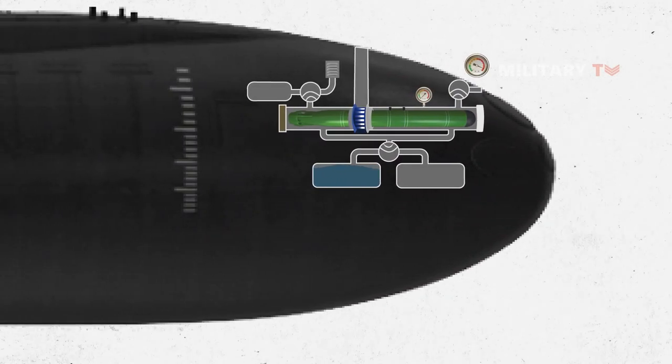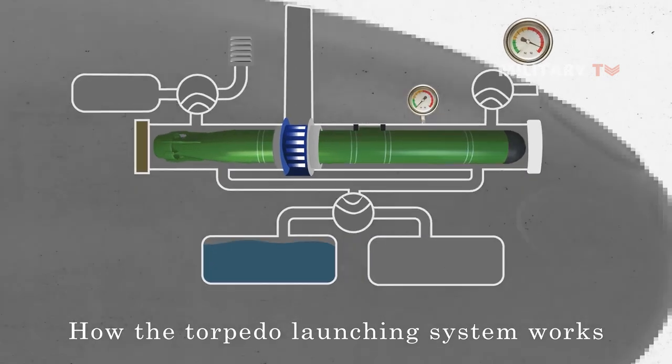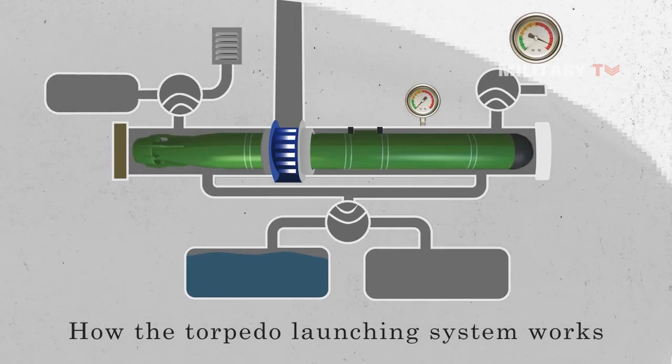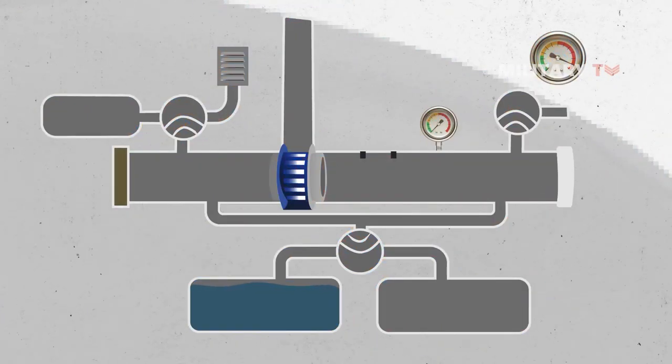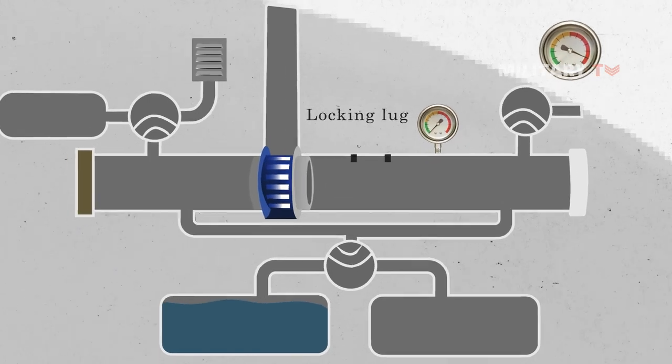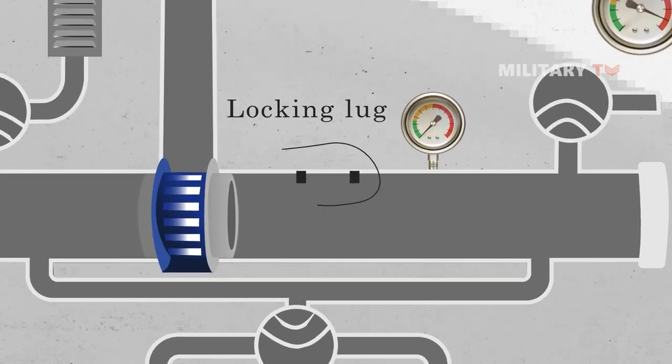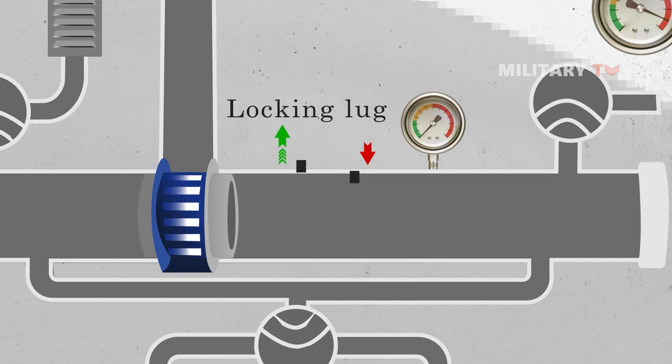In the following scene, we would like to precisely illustrate exactly how the torpedo launching system works. The first important thing is to assure that the locking lugs are in the right configuration to avoid the torpedo sliding forward and backward. The forward locking lug is in the load position, while the back one is in the up position.